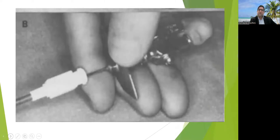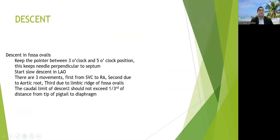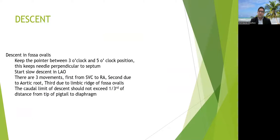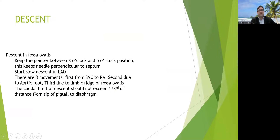Finger placement provides controlled movement of the needle at a particular angle. During descent in the fossa ovalis, keep the pointer between 3 and 5 o'clock — in most cases this gives a perpendicular orientation to the septum. Descent is started in LAO or AP view; in AP view the needle should be one intervertebral space below the pigtail in the non-coronary sinus. The three movements felt are: first from SVC to RA, second due to the aortic root, and third at the limbic edge of the fossa ovalis. The descent should not exceed one-third of the distance from the tip of the pigtail to the diaphragm to avoid a low puncture.